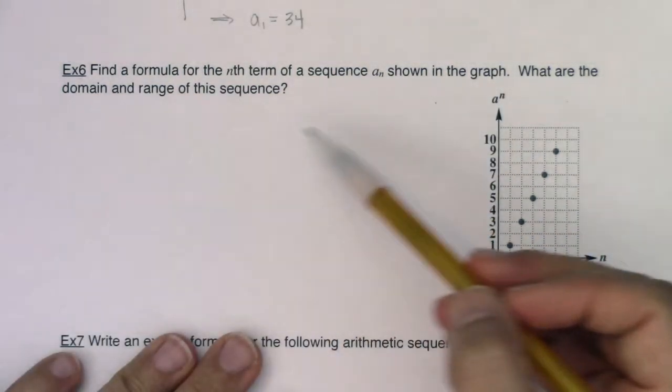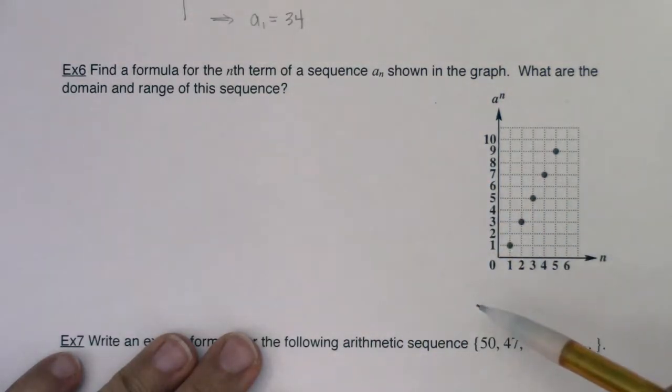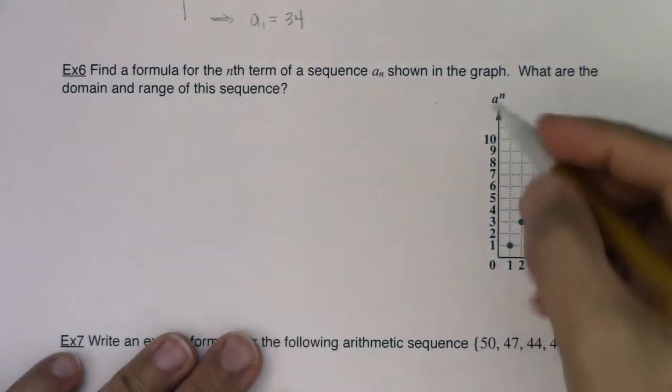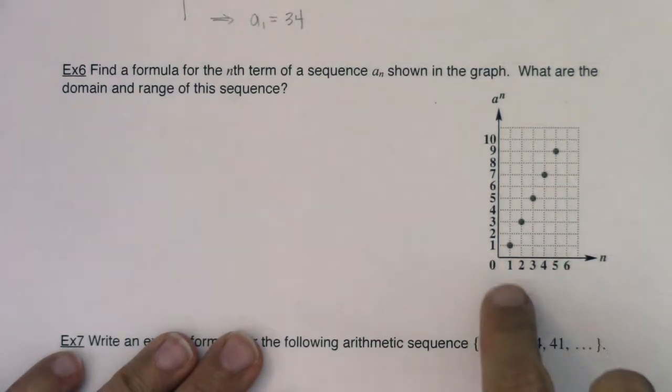I don't see anything here explicitly telling me it's arithmetic, but that's fine. Let's see if we can find a pattern here. If I take a look at this, my n's are along the x-axis and my a sub n's are along the y-axis. This is the nth term of the sequence.